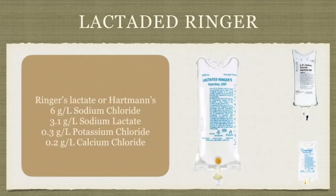Lactated ringers is a good alternative. It's been around for a long time. We feel it more closely matches blood than sodium chloride. As you can see with the chemicals in it, it has a little bit less sodium than the normal saline, and has a few other things like potassium and calcium in it. So this is one that is a good alternative to sodium chloride.